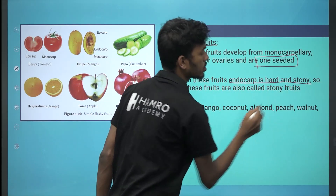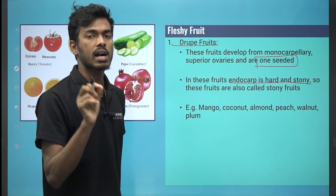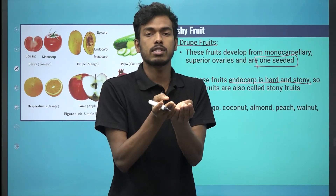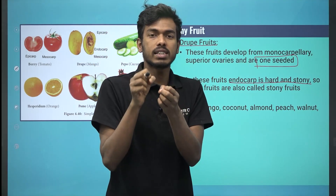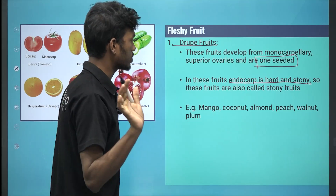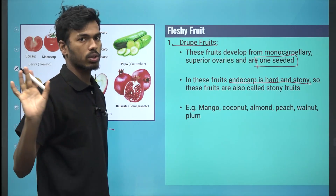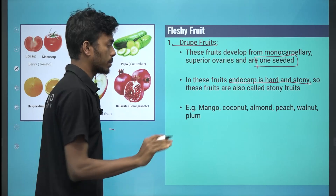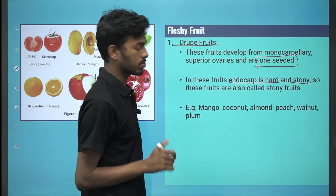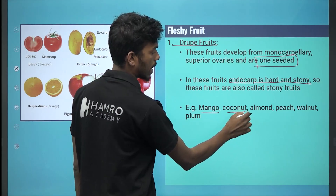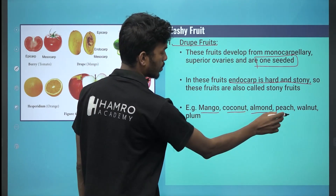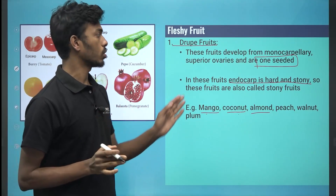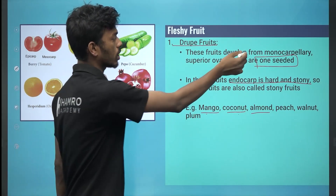What is the endocarp? The endocarp is hard. What is the drupe fruit? We have examples: mango, coconut, almond. That is the drupe fruit. This drupe fruit is monocarpellary superior.